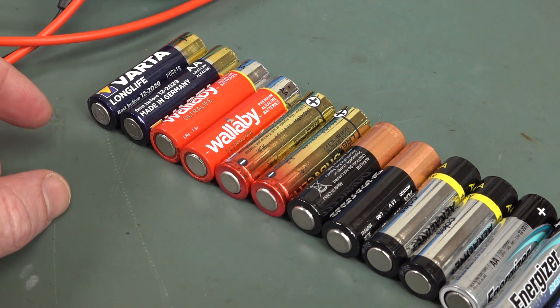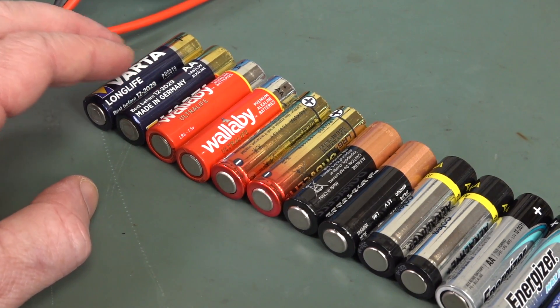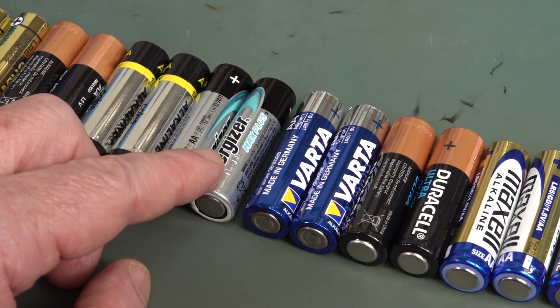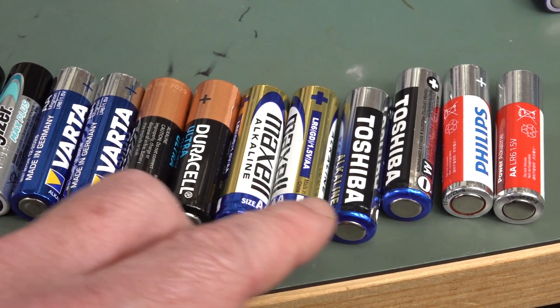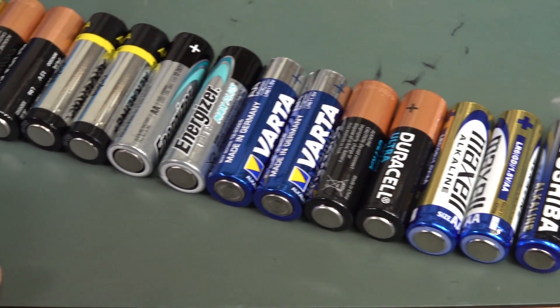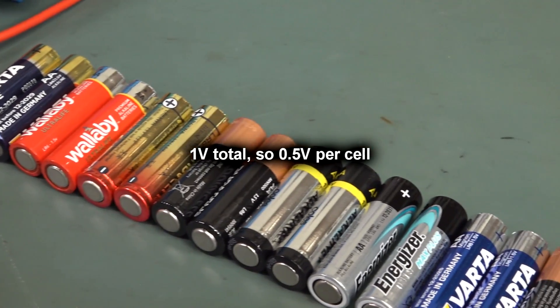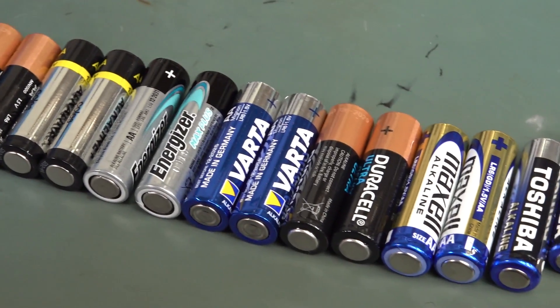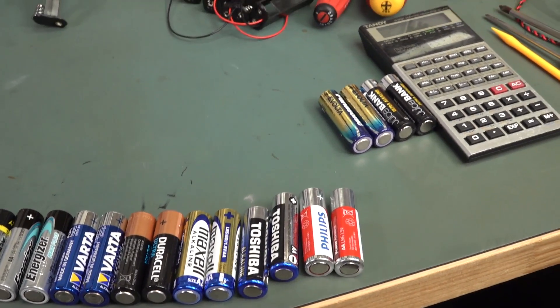All right, so out of all of those, the Varta ones over here, I think, did a reasonable job of getting some extra capacity. But by far the best was the Energizer Max Plus here. All the others, like the Maxells, the Shibas, the Philips, they lasted like two seconds on that one amp burst, before they dropped below one volt per cell, as measured on the terminals with extra losses there. So, yeah, most of them are pretty much, if you try and extract an amp out of them now, there's just nothing left in them. But, as I said, they do have some capacity left.